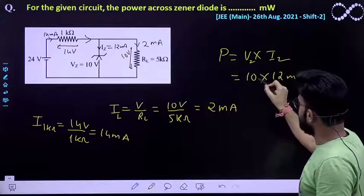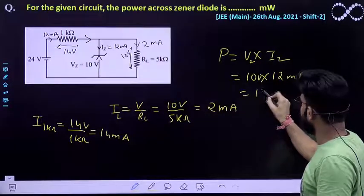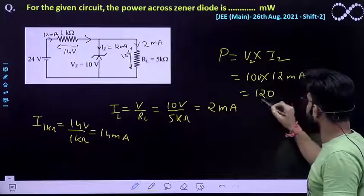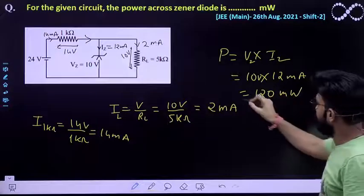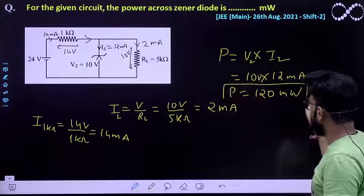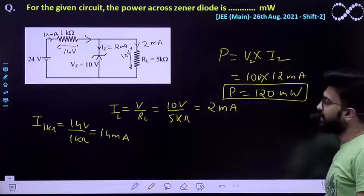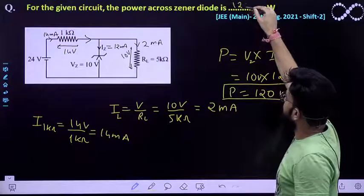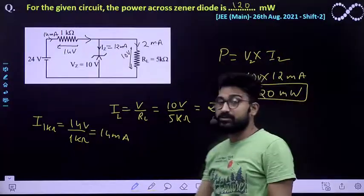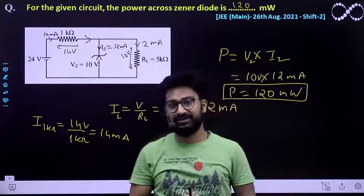And this is, this is in volt so you will be getting as 12, 120 milliwatt. So the power across Zener diode comes out to be 120 milliwatt. So the answer would be 120 over here. I hope this question is clear to everyone. Thank you.